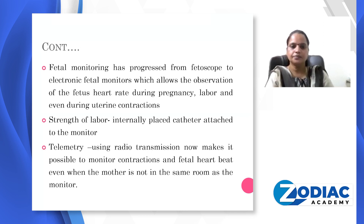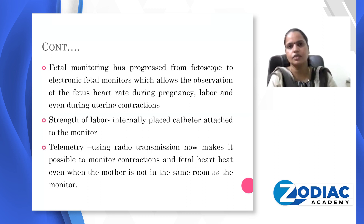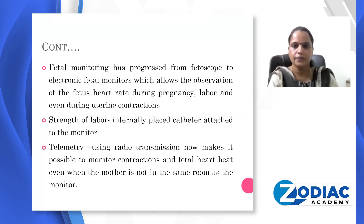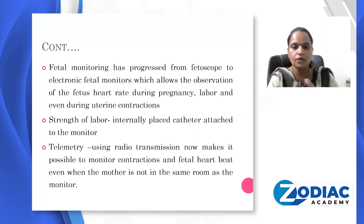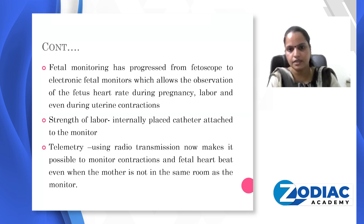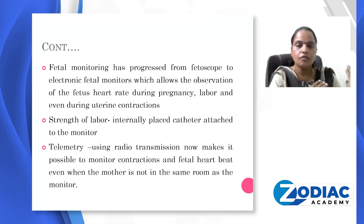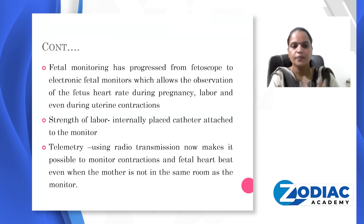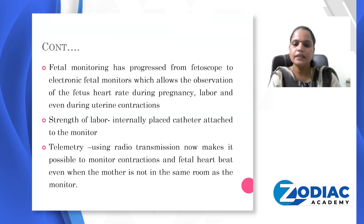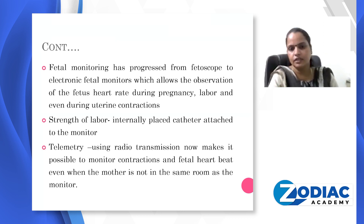The next instrument assesses the strength of labor. Labor contractions are categorized into three types: mild, moderate, and severe. Mild contraction is 0 to 20 seconds, moderate contraction is 21 to 40 seconds, and severe contraction is 41 to 60 seconds. Initially, we assess strength by placing our hands over the abdomen. Now we have an internal catheter that can be placed through the monitor to assess the strength of labor.